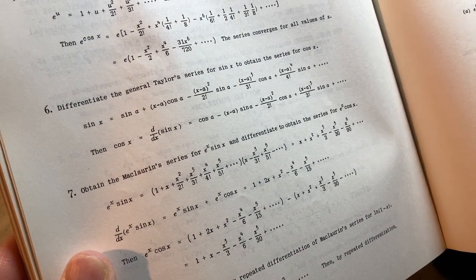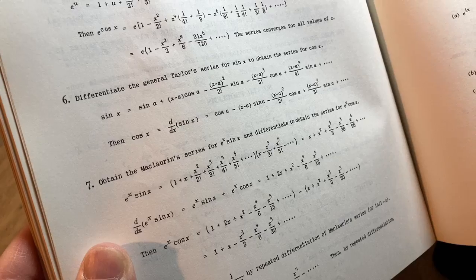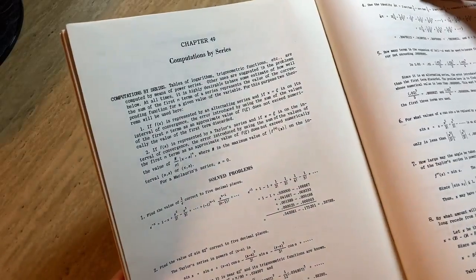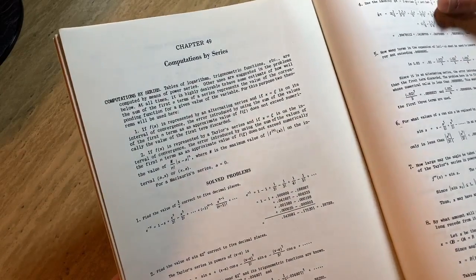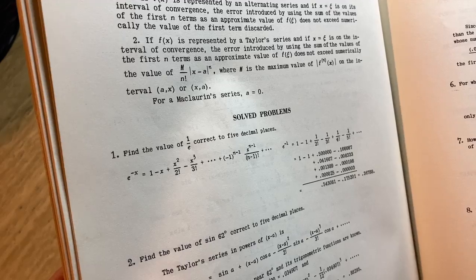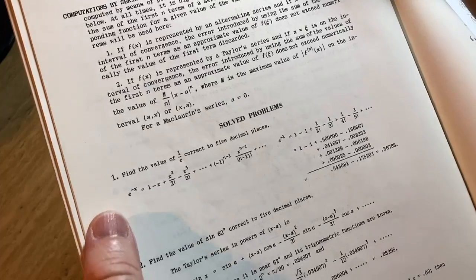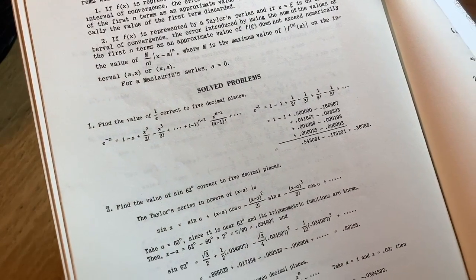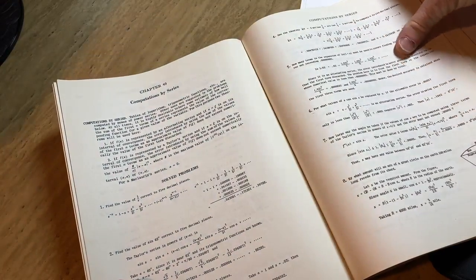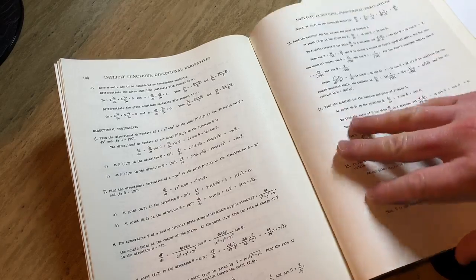Oh, this is cool. Obtain the Maclaurin series for e to the x sine x. I actually have a video on that. And then differentiate it to obtain the series for e to the x cosine x. Oh, how cool. How interesting. Huh. Computations by series. Oh, right. Computing values and stuff. Like, find the exact value of 1 over e, correct to five decimal places. Right, so you can approximate it with the infinite series. Yeah, so basically, to get this series, e to the negative x, you take the Maclaurin series for e to the x, and you replace it with negative x. Find the value of sine of 62 degrees, correct to five decimal places. Very nice. So, yeah, just a nice book with lots of examples, lots of calculus. Good for anyone who, you know, wants to learn some calculus. And it's really affordable, so I just thought I would share.